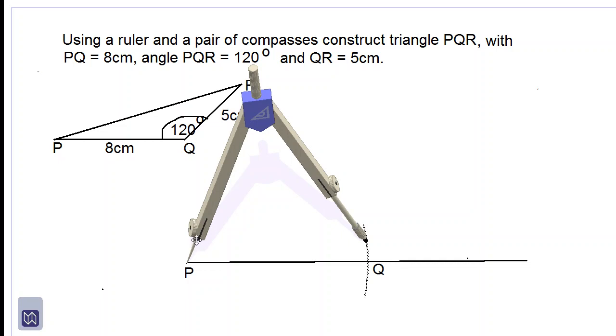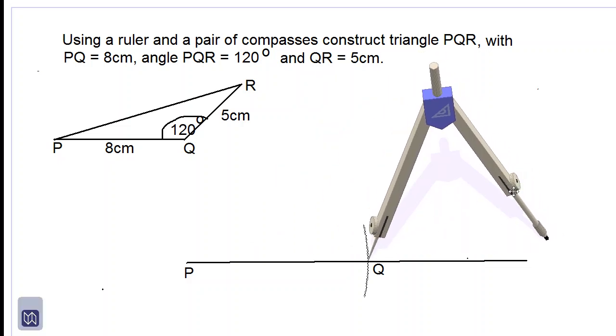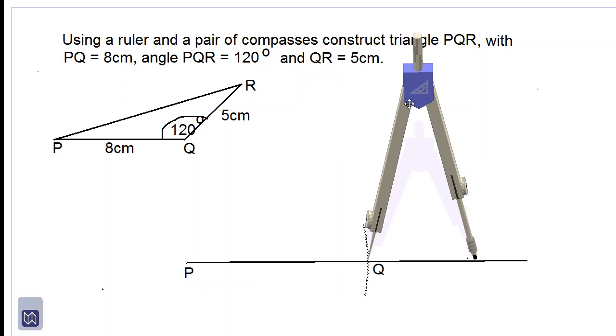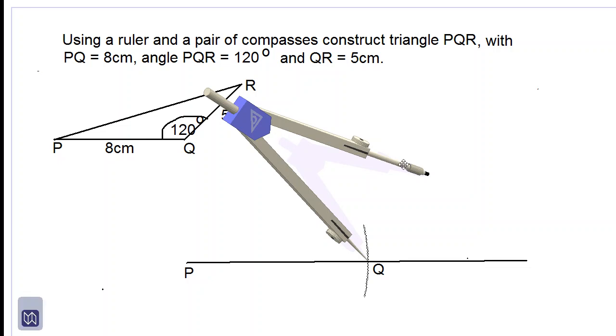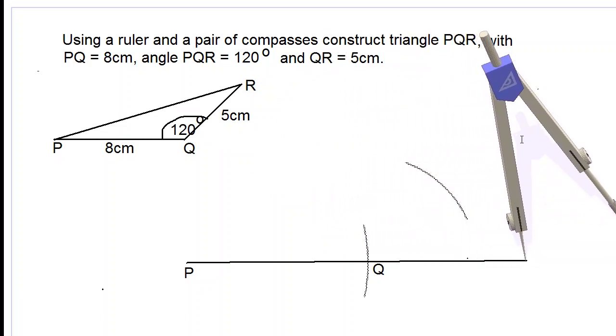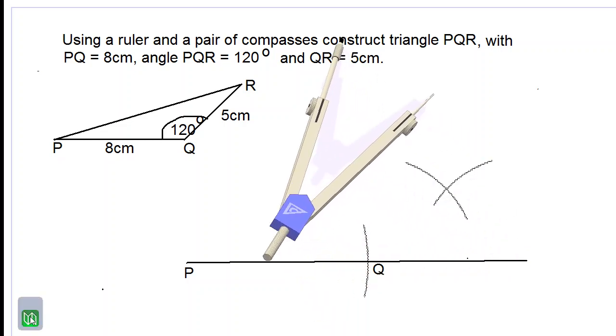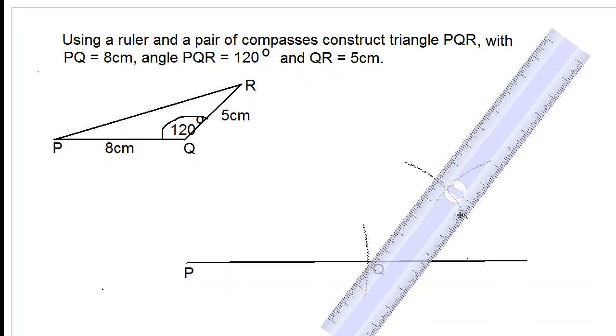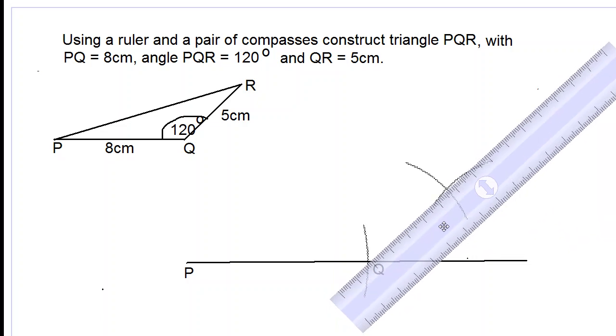Now we're going to use our compass because we want to get an angle of 120 degrees. This is our plan: we want to construct a 60 degree angle at Q. We stretch out our compass until it's more than halfway between Q and the end of this line, and we make our construction arc. Not changing the width of the compass, place the point at the other end and we make another construction arc to intersect the first one. We now take out our ruler again and draw a line that is more than five centimeters in length.